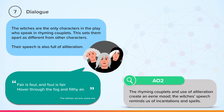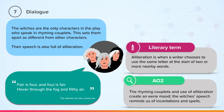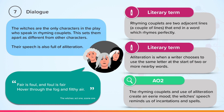The rhyming couplets and use of alliteration create an eerie mood. The witches' speech sounds like an incantation or a spell. Alliteration is when a writer chooses to use the same letter at the start of two or more nearby words — an example of this is 'Fair is foul and foul is fair.' Rhyming couplets are two adjacent lines that end in a word which rhymes perfectly. If you read aloud the words 'bear' and 'air,' you will hear the perfect rhyme.